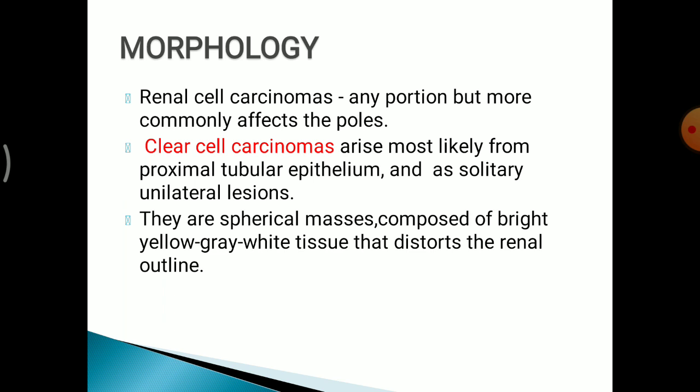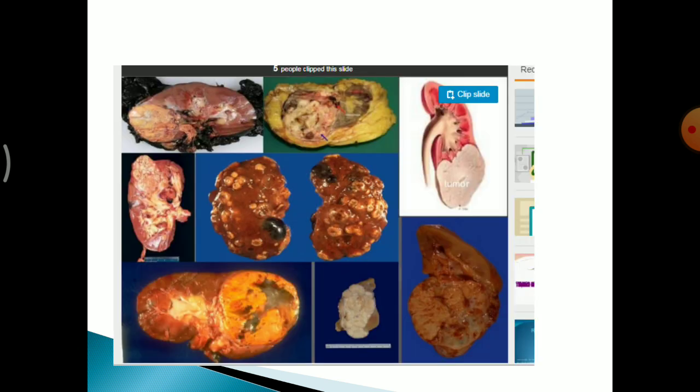Morphology: renal cell carcinomas can occur in any portion of the kidney but more commonly affect the poles. Clear cell carcinoma arises most likely from the proximal tubular epithelium as a solitary unilateral lesion. They are spherical masses composed of bright yellow to grey-white tissue that distorts the renal outline. They can be single discrete grey-yellow to grey-tan tissues seen in either pole of the kidney, distorting the renal outline.